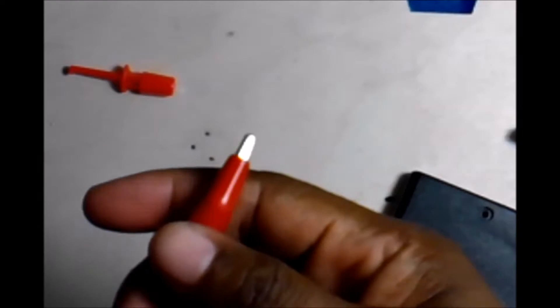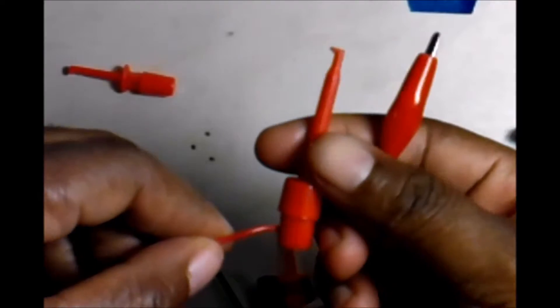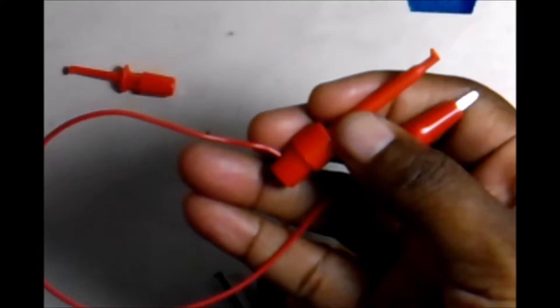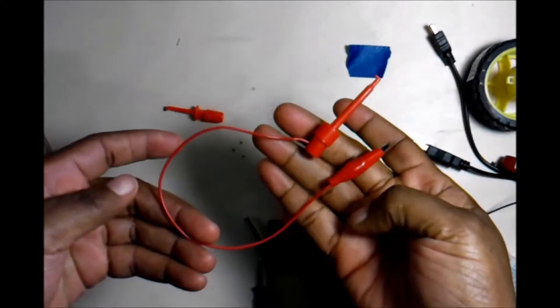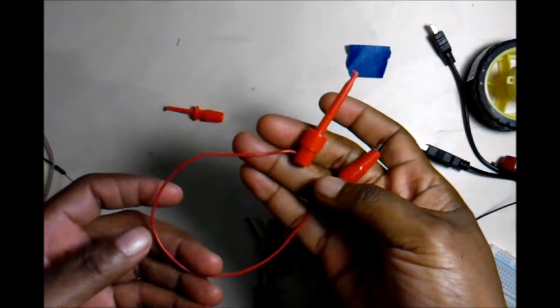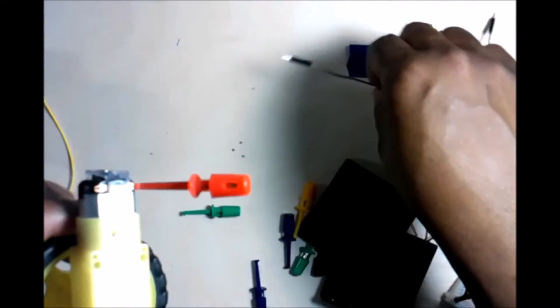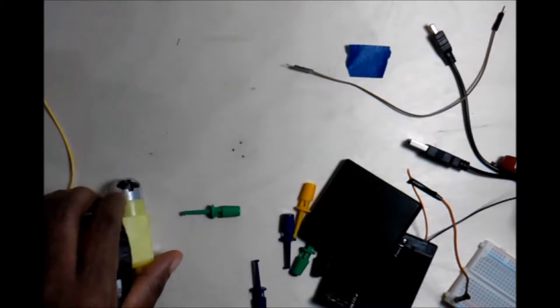You know how we did the jumpers yesterday with an alligator clip on one side and then the actual test hook on the other side? As you can see, that's nice for testing. Now we're going to try another setup. I want to put a test hook on either side of the wire.